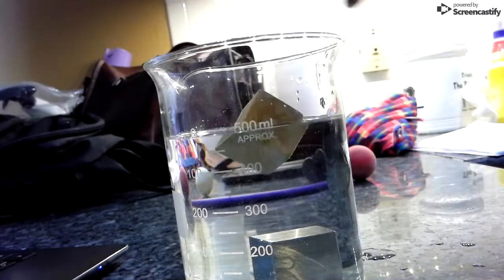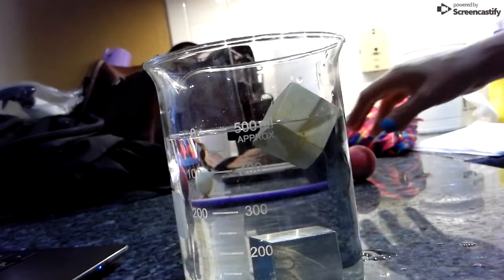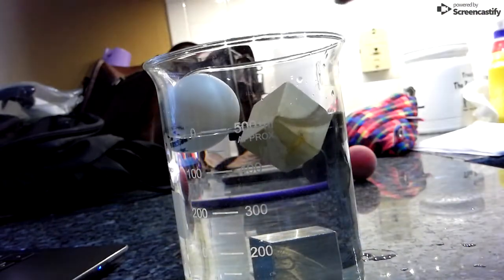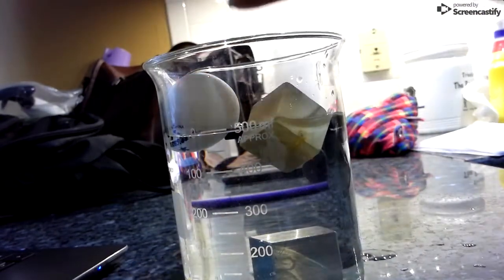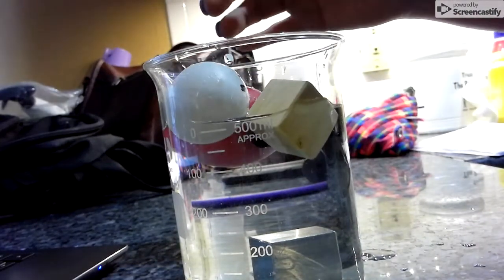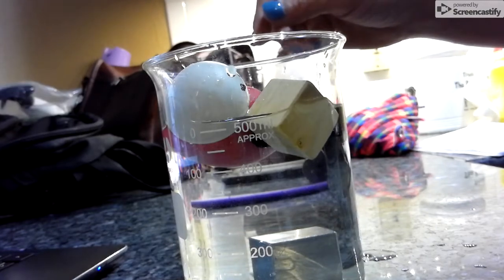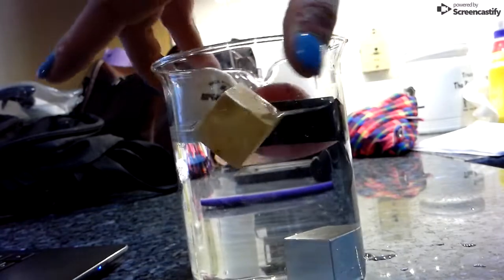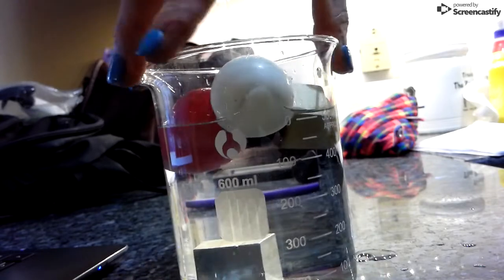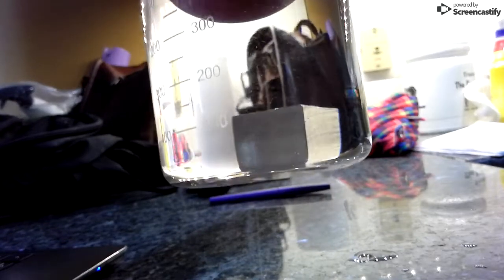A domino, float, ping pong ball, float. And last, the rubber ball. Float! I didn't see that one coming, did you? Look at all these objects that are floating. Pretty cool, huh? And then the only thing that sunk was our metal cube and the paperclip.